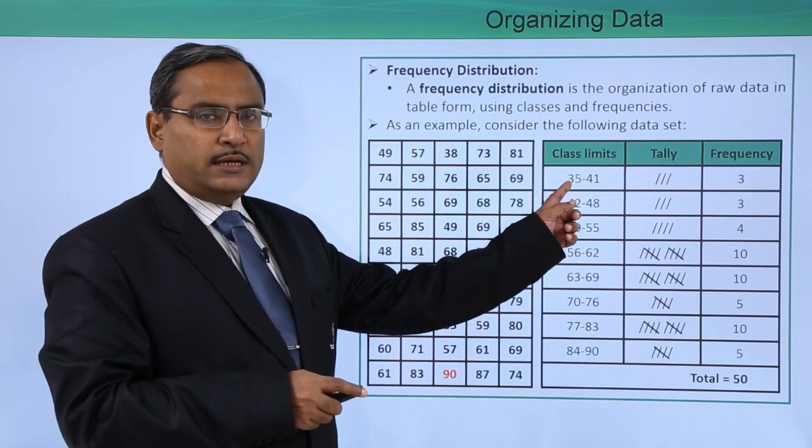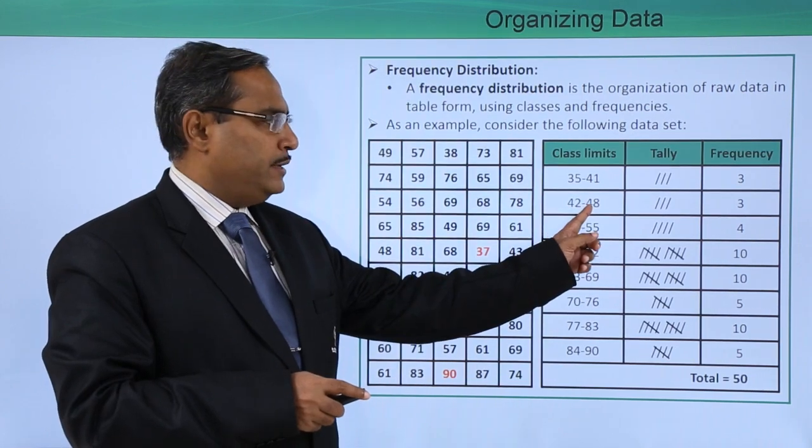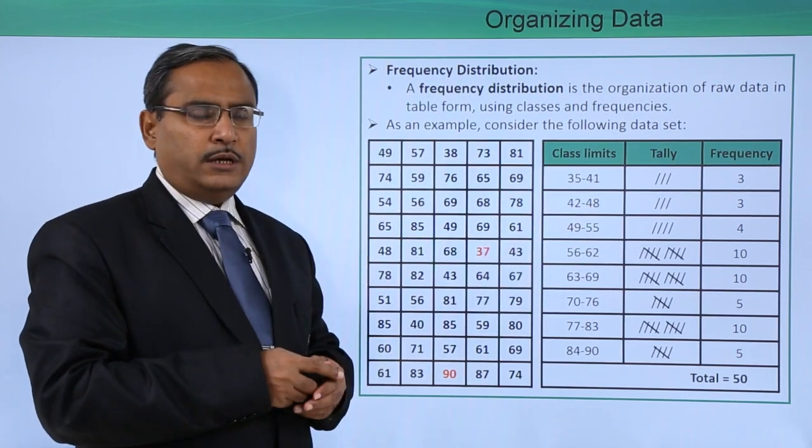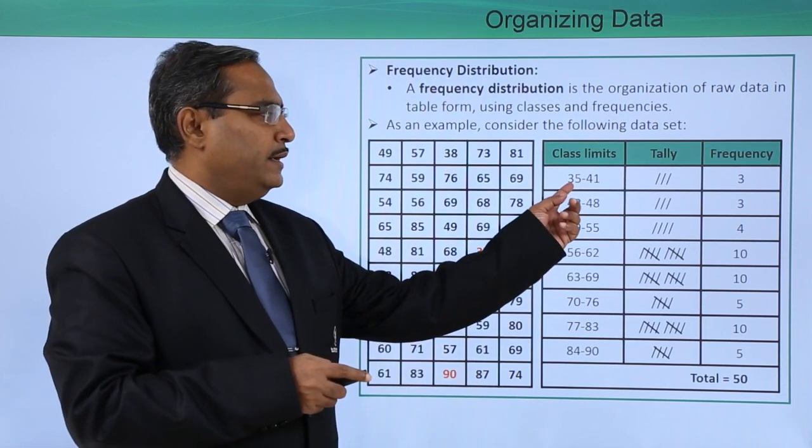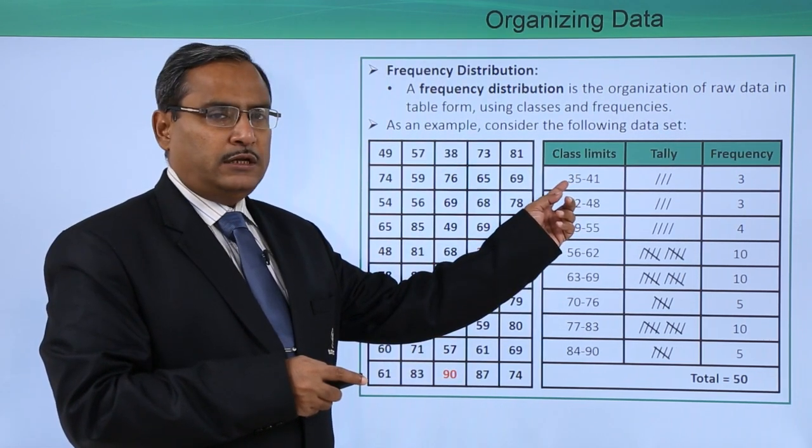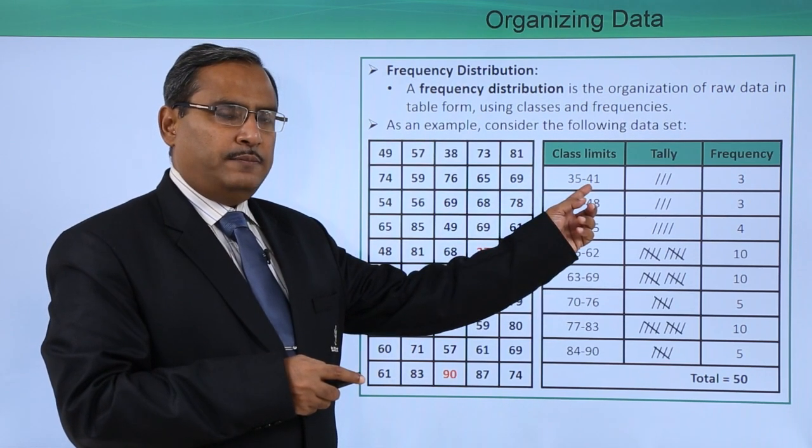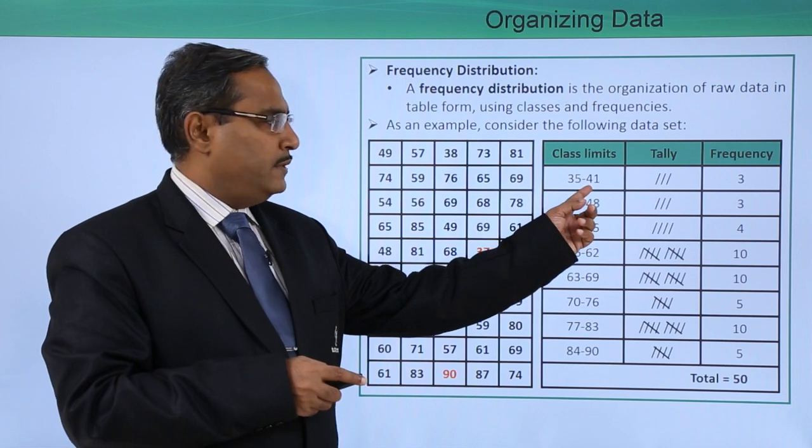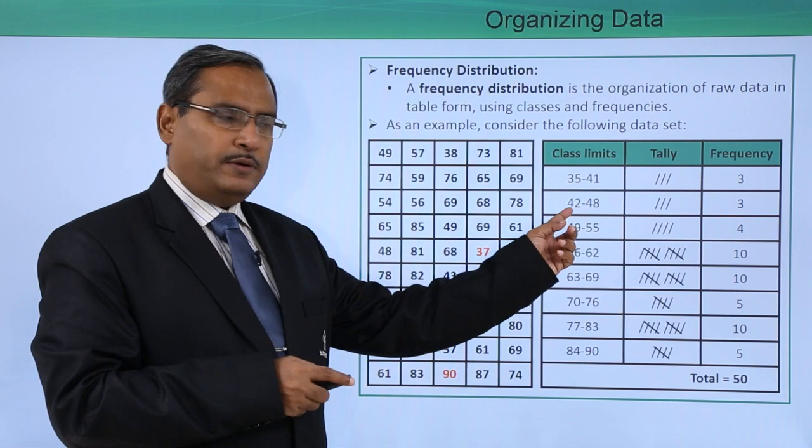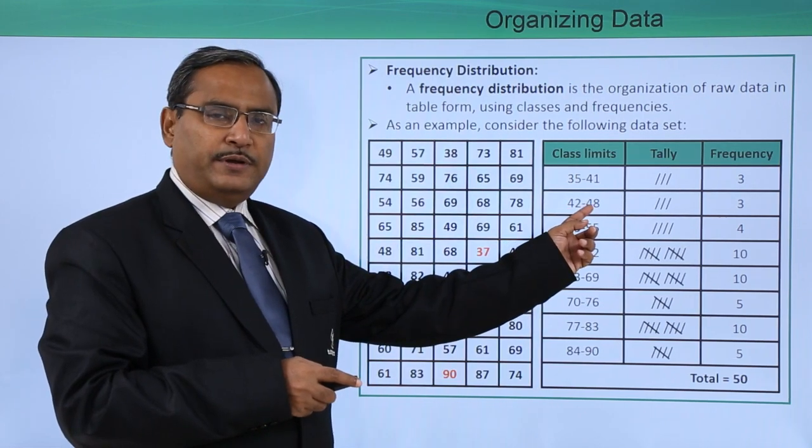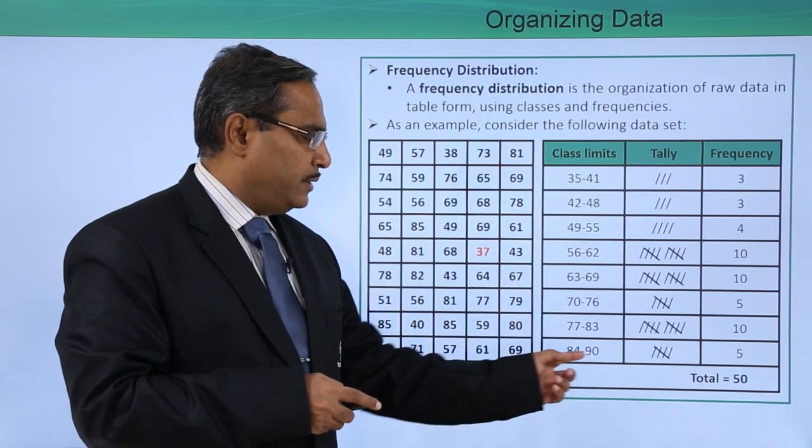Now, these are known as the lower class limit, this is the upper class limit. You can convert it to the lower class boundary and upper class boundary by deducting 0.5 from here. It will become 34.5, and adding 0.5 here, it will become 40.5 and 41.5. Here, deducting 0.5, it will become 41.5, and adding 0.5 here, it will become 48.5. In this way, we are having the respective class limits.